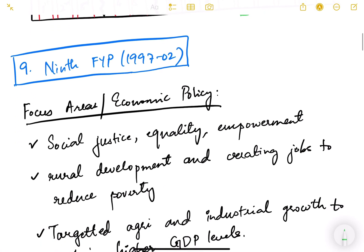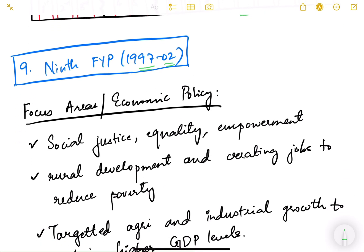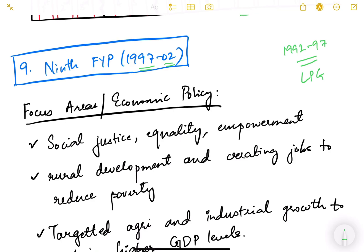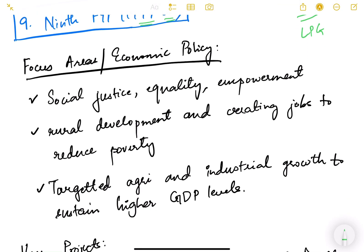The 9th five year plan was from 1997 to 2002. It was a continuation of the previous plan from 1992 to 1997, during which very important economic policy changes happened — we adopted the LPG policy and the new industrial policy came in 1991. However, there were additional focus areas like social justice, equality, empowerment of rural people and women, rural development, job creation to reduce poverty, and targeted agriculture and industrial growth to sustain higher GDP levels.